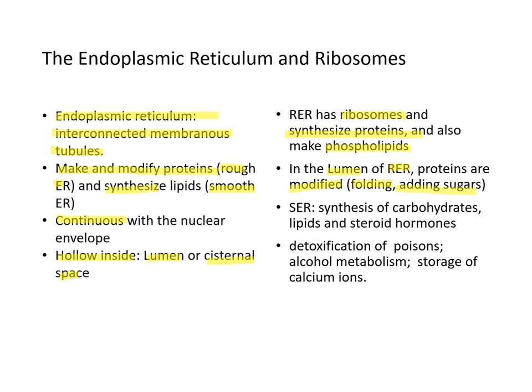In smooth ER, the synthesis of carbohydrates, lipids, and steroid hormones occurs. It is also where detoxification of poisons — such as alcohol metabolism — takes place, and smooth ER stores calcium ions.